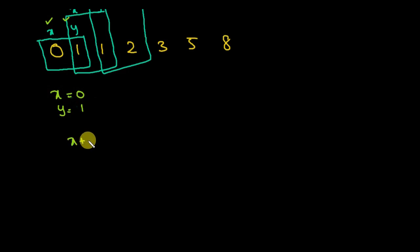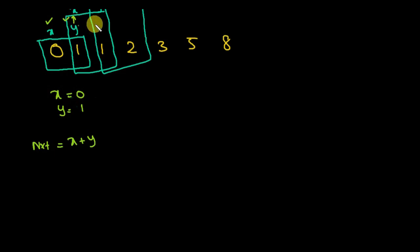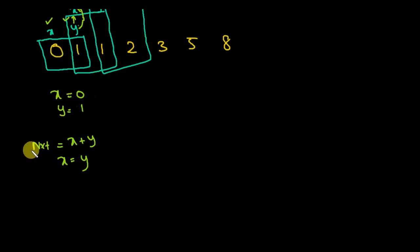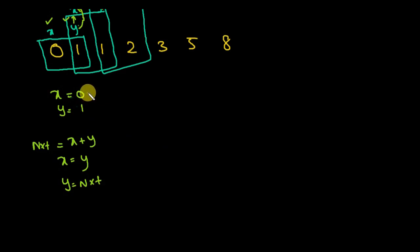After computing the next value, we need to make the following assignments: whatever is stored in Y must be given to X, and whatever is stored in the next variable must be given to Y. So we write X equal to Y and Y equal to next. To print the values, while assigning, we first print the X value using printf.